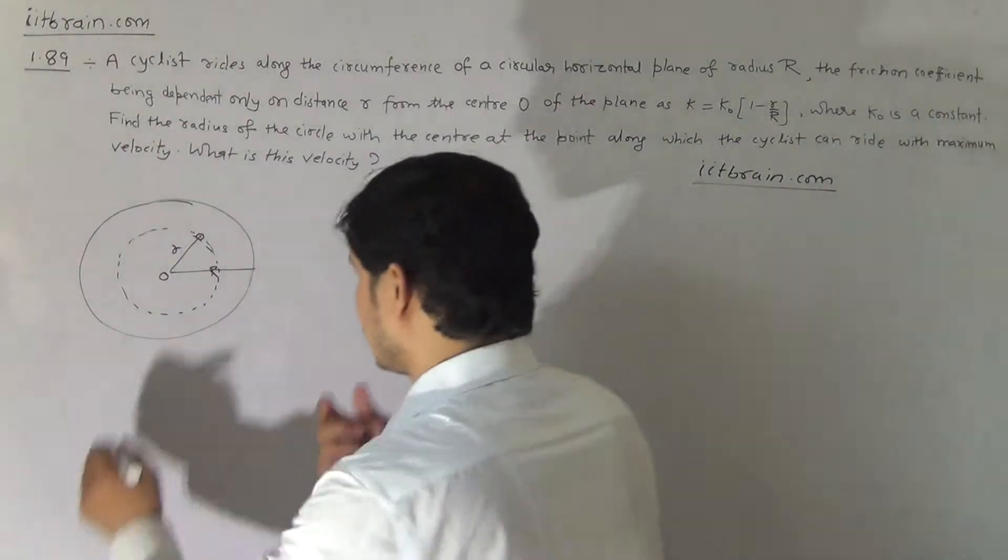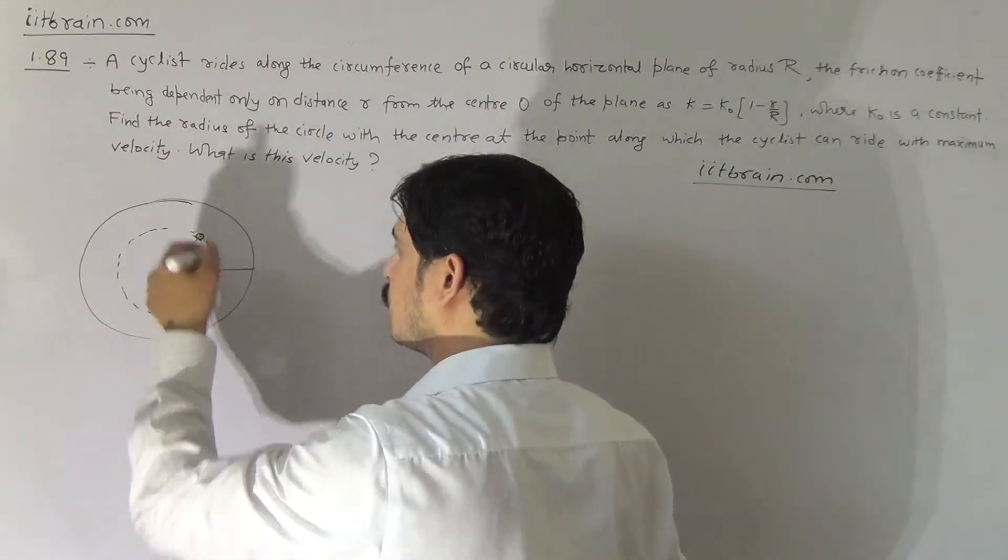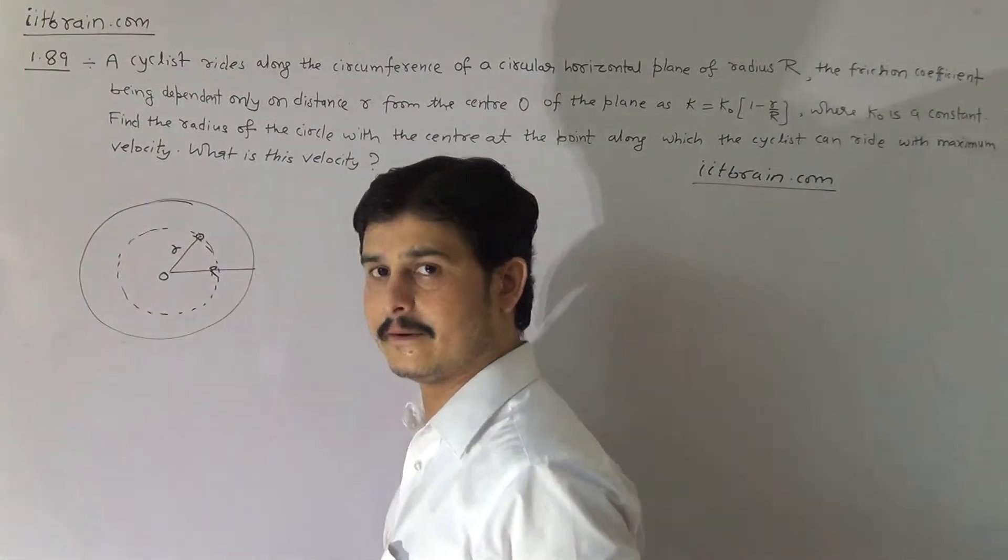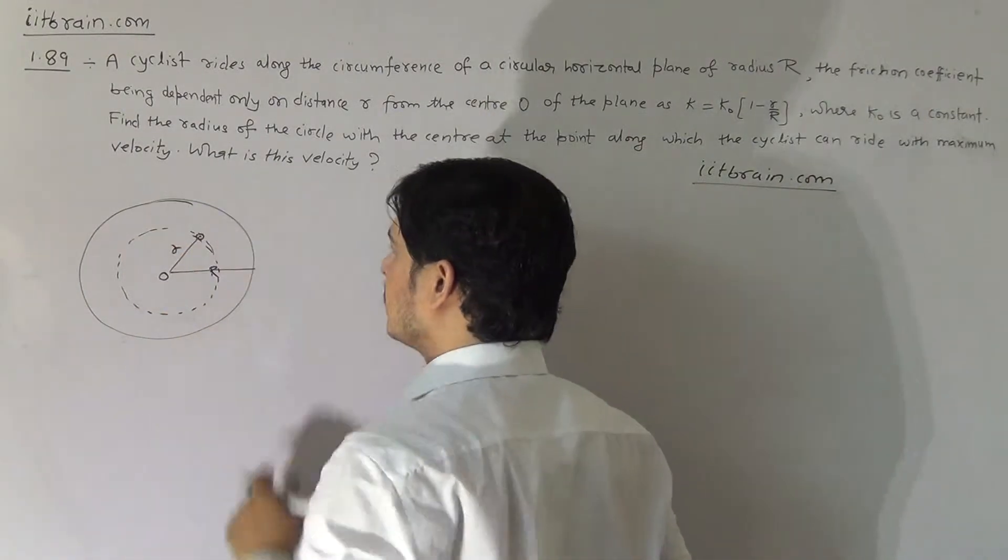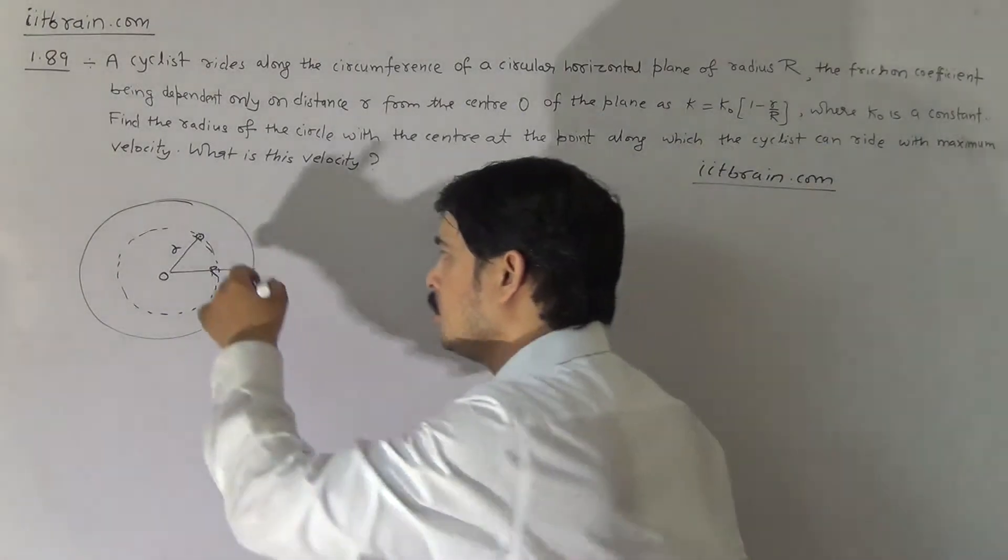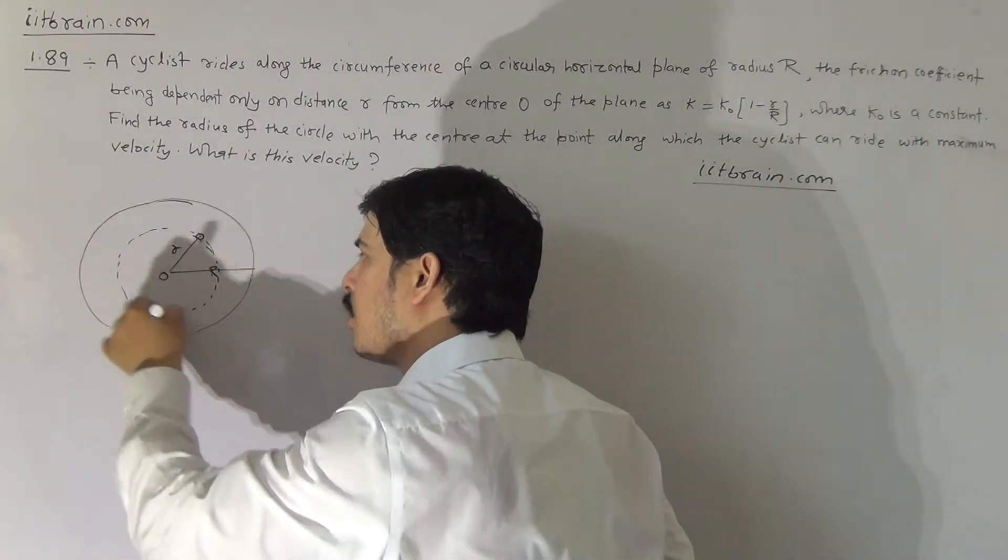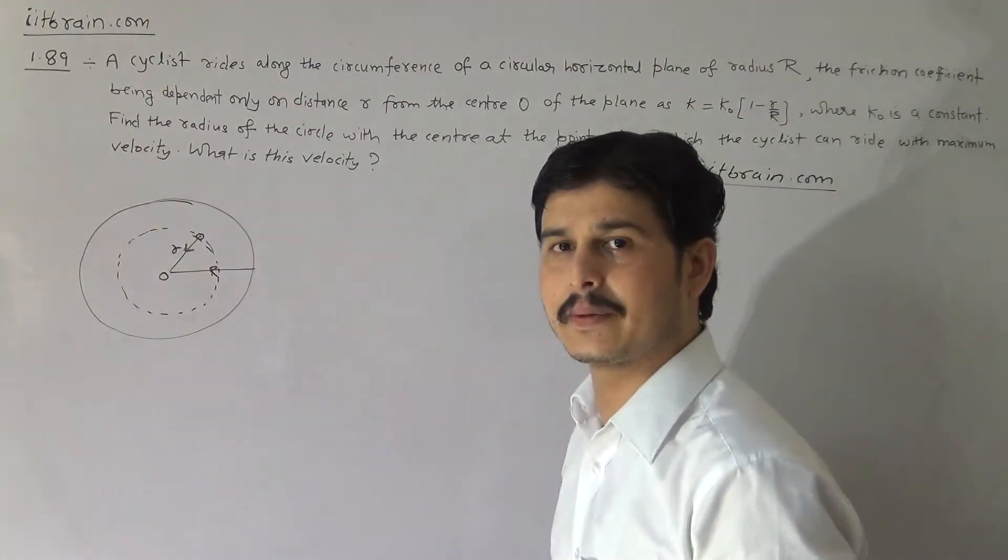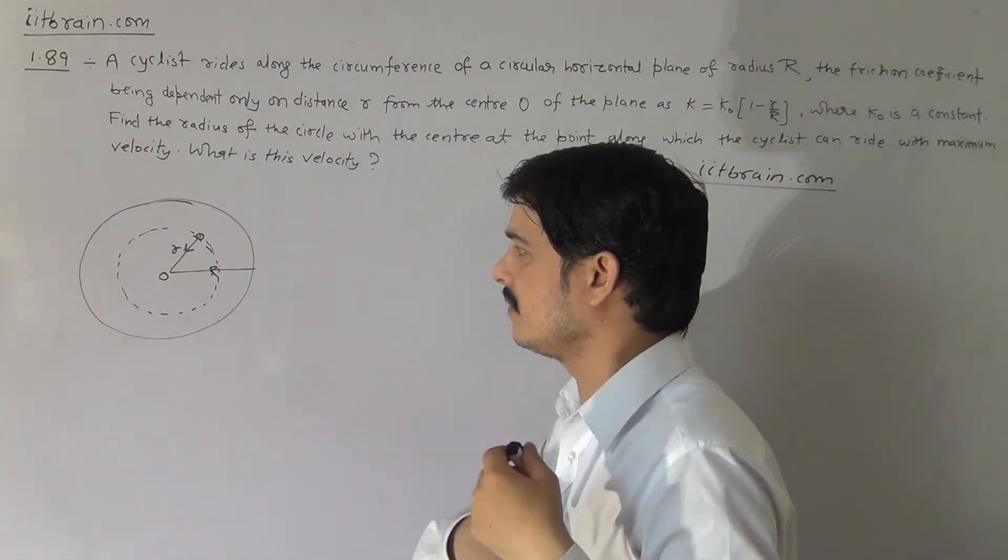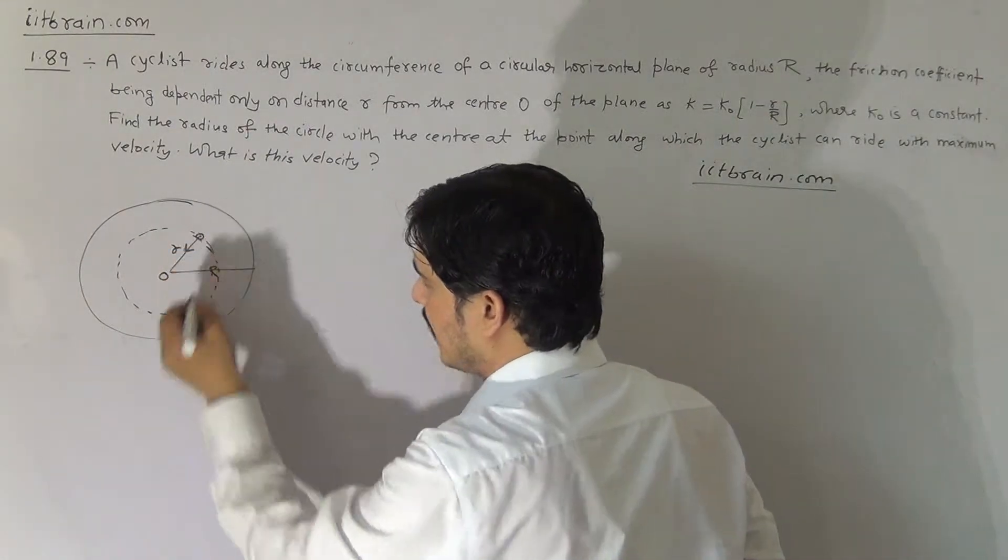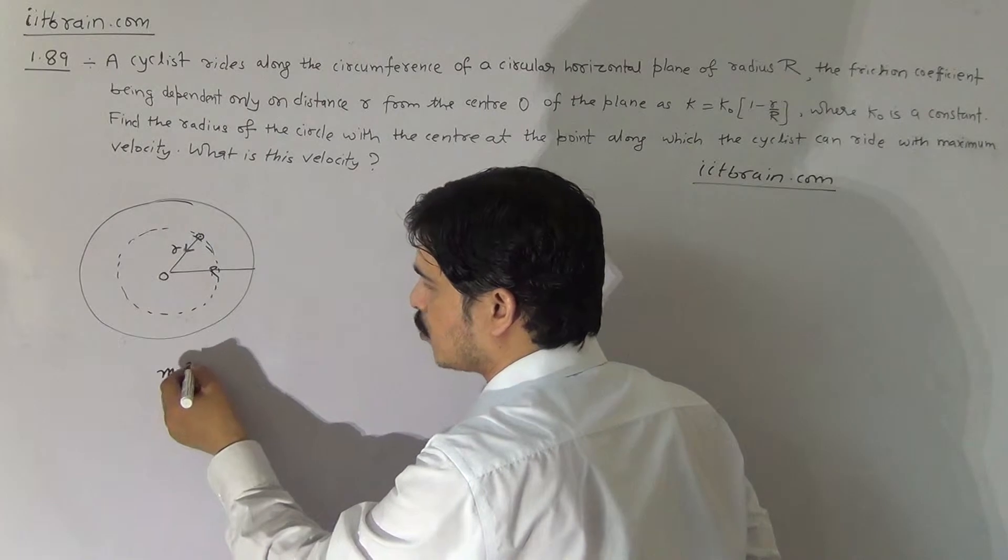So consider the particle, the man. Suppose the cyclist is revolving in this circle, in this dashed circle, then in this path, as we see, there is no tangential acceleration on the particle, so only there is a need for one acceleration which is named as centripetal acceleration. Only centripetal acceleration is needed for the particle, and the value of the centripetal acceleration in this path will be mv square by r.